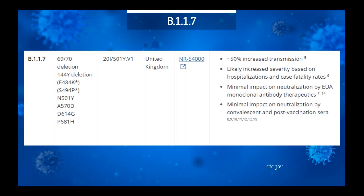This is a snapshot from the CDC website with a nice summary of one of the variants of concern, B.1.1.7, including details about its patterns of mutation and a description of its concerning features. We know, for example, that it is likely more infectious and associated with more severe disease. But we know in the bottom comments that it matches up very well against serum from someone who's been vaccinated or previously infected — in other words, the vaccine seems to be a really excellent match at this point.